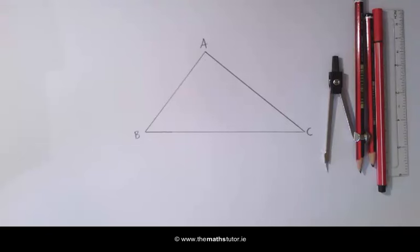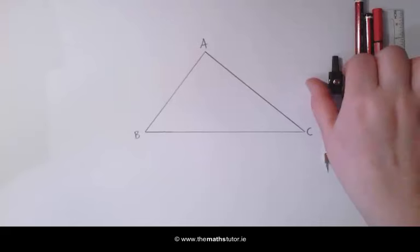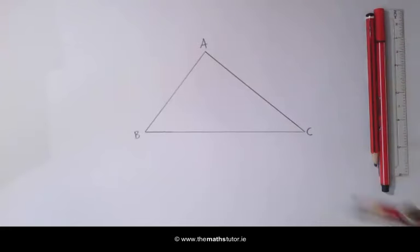In order to construct a median, we are going to find the midpoint of a line and join it to the opposite vertex. The first thing we are going to do is find the midpoint of the side AC. To find the midpoint, we perpendicularly bisect the line.